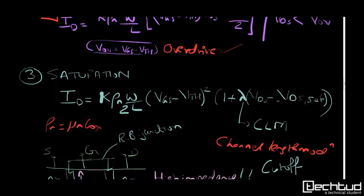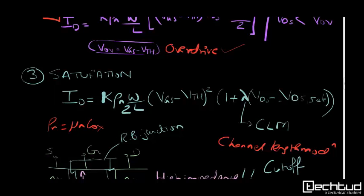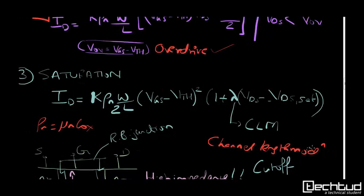Third is saturation region operation. Here ID is K Rho W by L, where Rho is mu and COX, times VGS minus VTH whole square times 1 plus lambda VDS sat. Lambda here is channel length modulation.